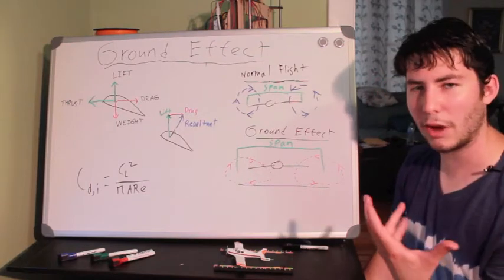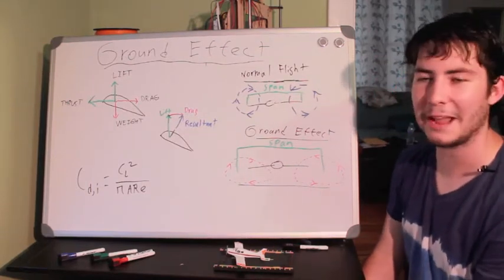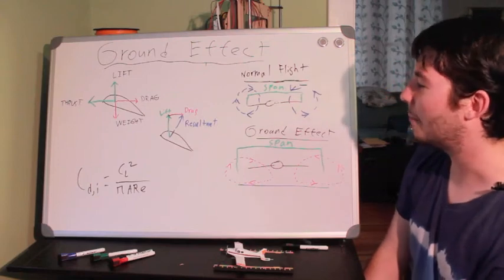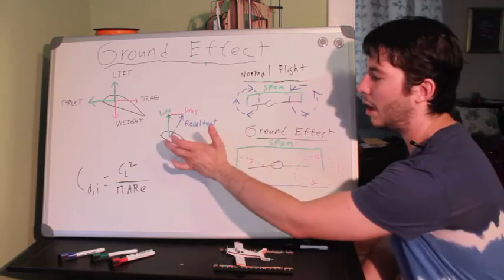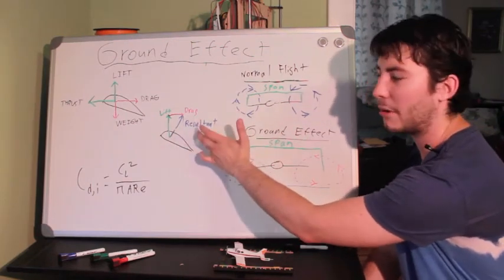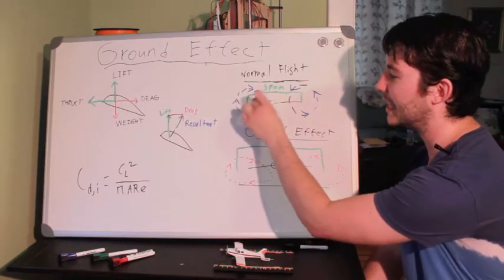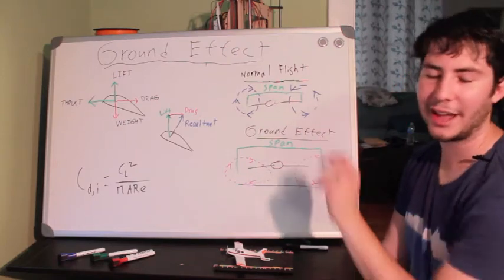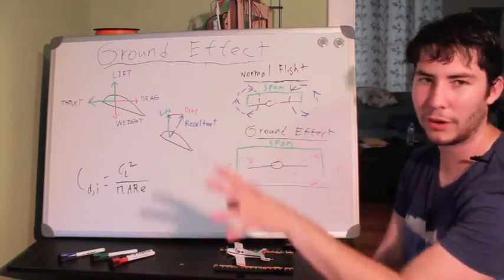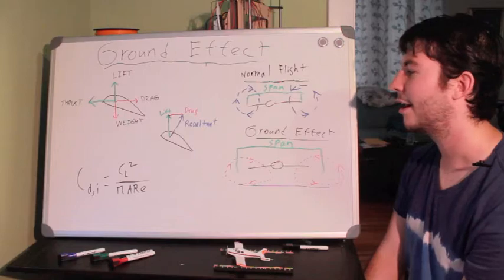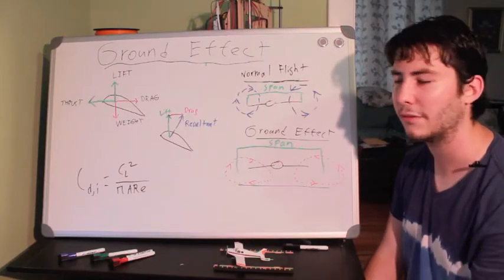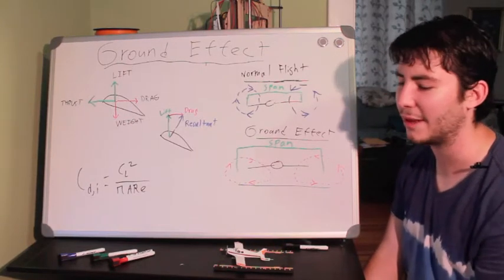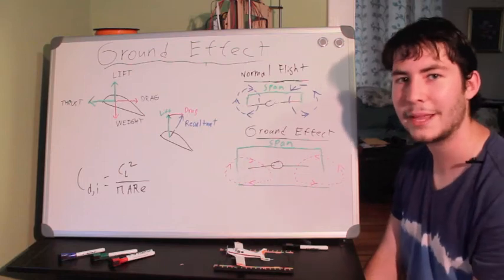What they often don't cover in the first day of aerodynamics is that when the high pressure area below and the low pressure area above meet at the end of the wing, you get something called a wing tip vortex. This is another can of worms, a whole crazy concept of what goes on there. If you Google wing tip vortices, you'll find some incredible stuff about how dangerous they can be when an aircraft is flying behind another aircraft,